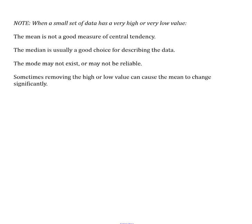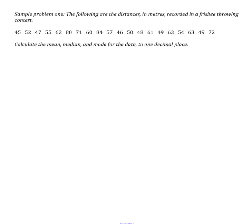Let's look at some examples of mean, median, and mode. These are all distances in a frisbee throwing contest. To find the mean, we're just going to add up all the numbers and divide by how many there are. So first thing we should figure out is how many numbers there are.